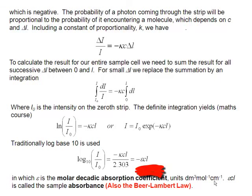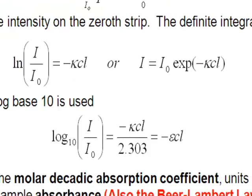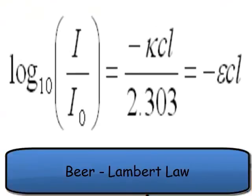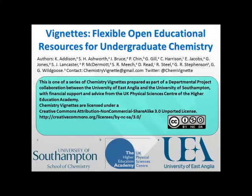That whole thing, εcl, is sometimes referred to as the absorbance, and that equation there, log₁₀(I/I₀) equals minus εcl, is known as the Beer-Lambert law.